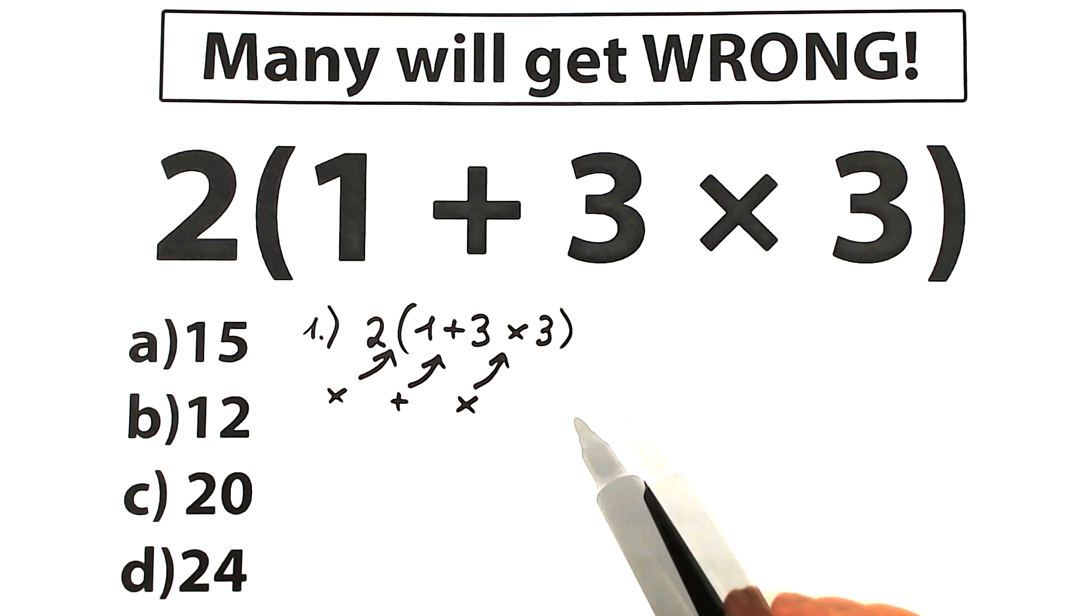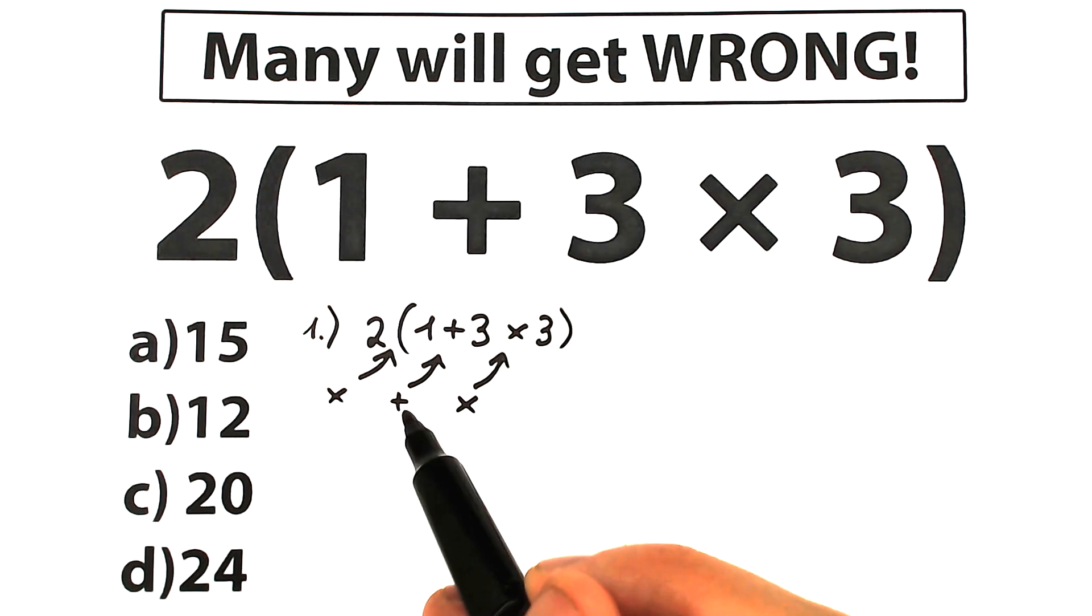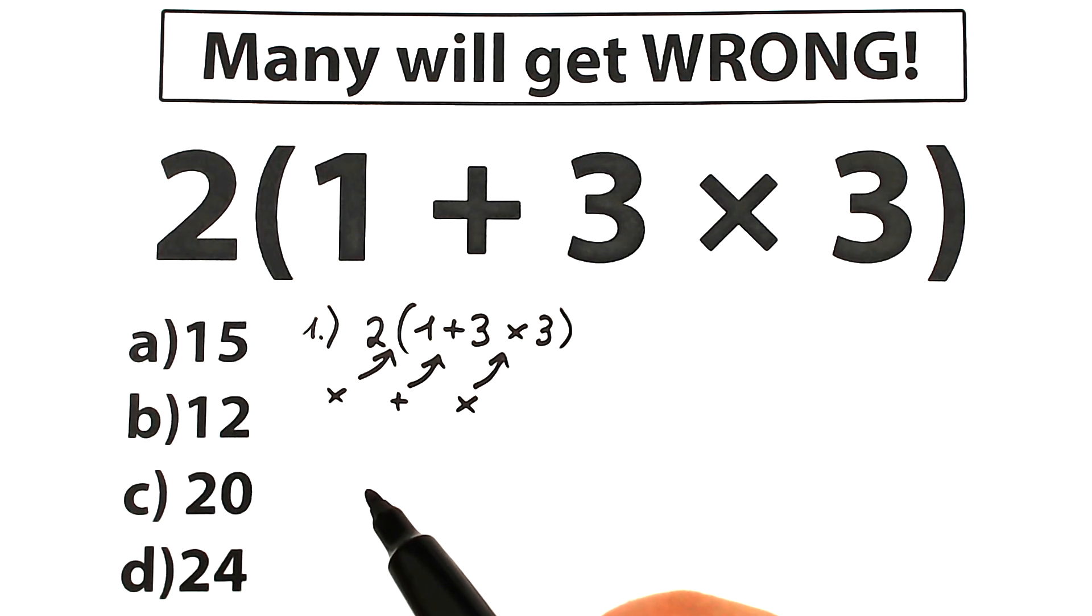Obviously right here whatever order of operation we select is going to create a different answer, right? In terms of math we should know what is the correct order to do this problem. If we start with multiplication we have one answer, if we start with addition, completely another answer, and if we start from this multiplication we have completely different answer. But in terms of math it's really weird to solve this question with 2 answers.